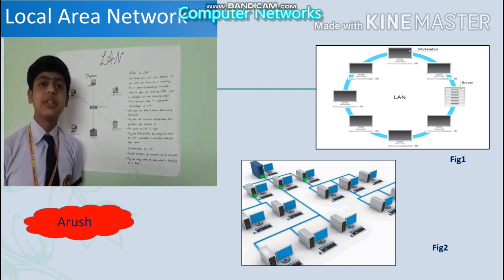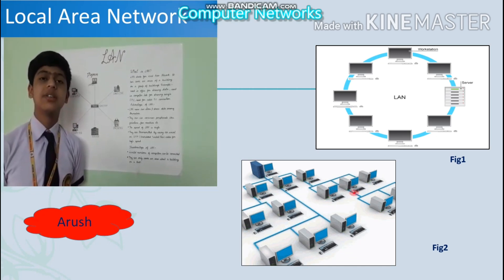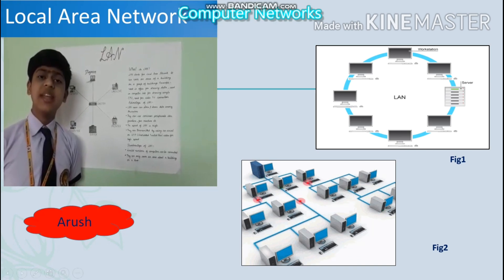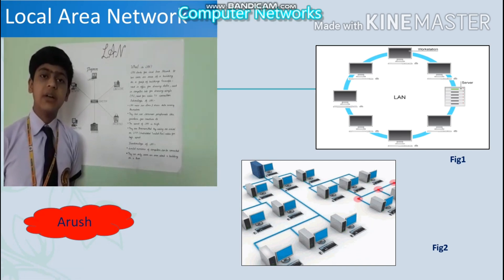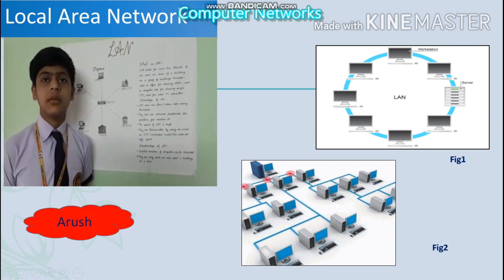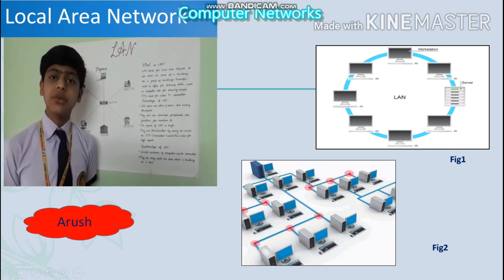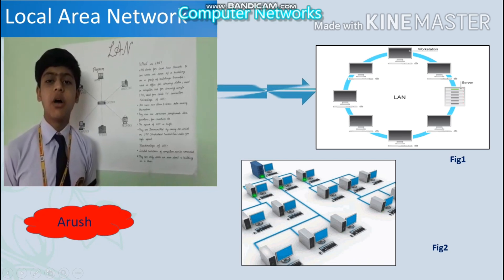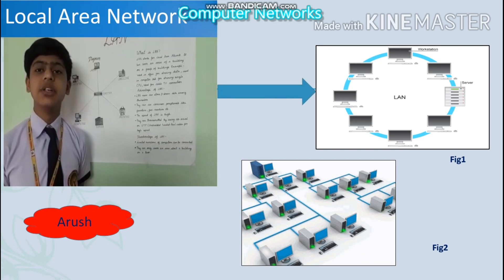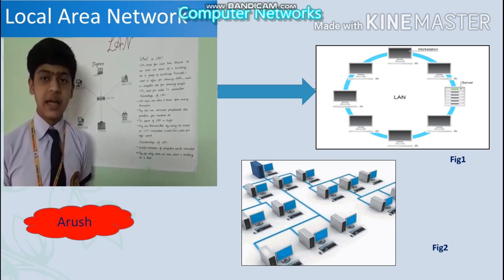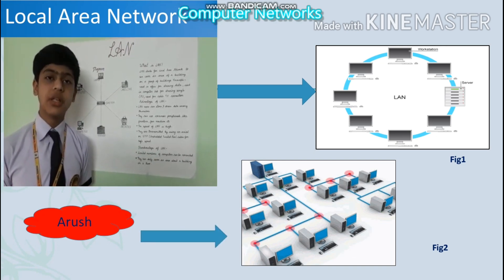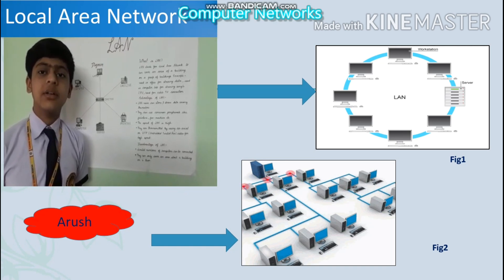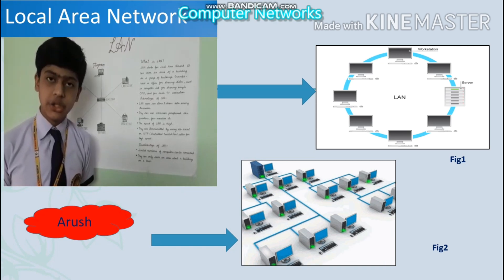As nothing is complete in this world, LAN has some disadvantages also. Limited numbers of computers can be connected and it can only cover an area of a building or a group of buildings. Here you can see two diagrams flashing on the screen. Figure 1 shows how computers are connected to each other using LAN, and figure 2 shows an example of a computer lab where each computer is connected with each other using LAN. Thank you.